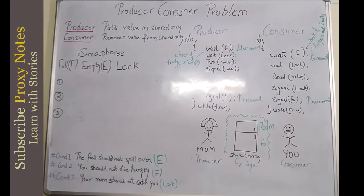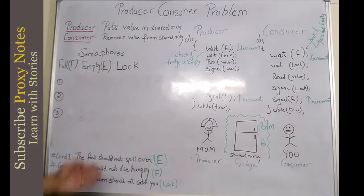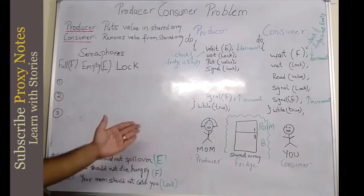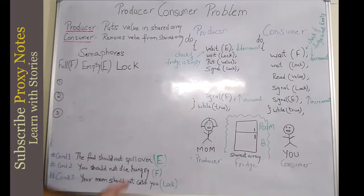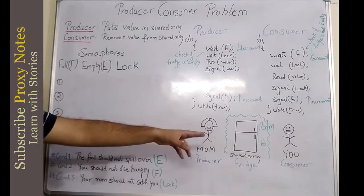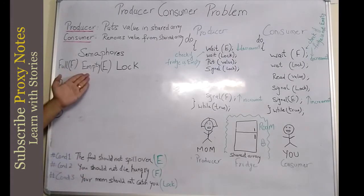Problem number three is the problem of the critical section. Your mom should not catch you while taking the food, and on the other hand your mom also doesn't want you to find out she is storing all the food for tonight's dinner in the fridge. So we need a mechanism for both of you to keep the other away — which is the lock on the room. The refrigerator is kept inside a room and the room has a lock. We are going to solve all three problems using semaphores.